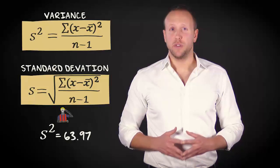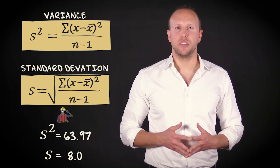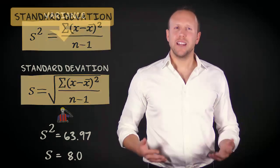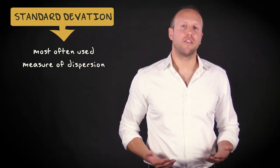The standard deviation of team 2 is the square root of 63.97. That equals 8.0. The standard deviation is the measure of dispersion that is used most often.